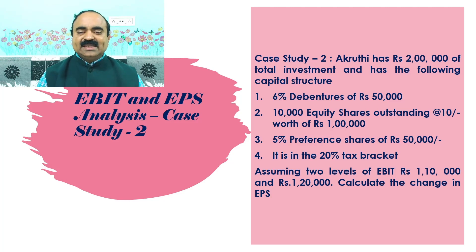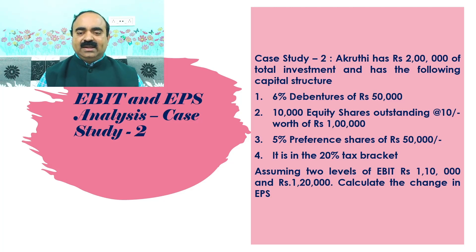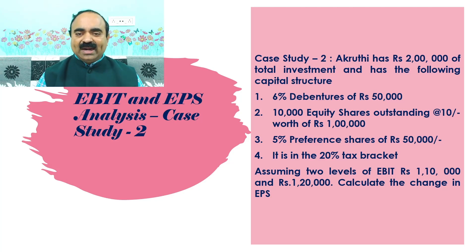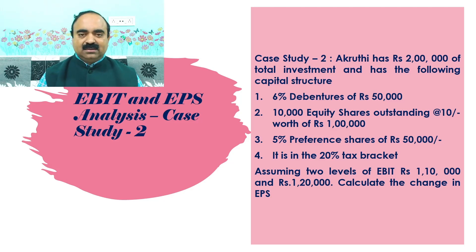1. 6% debentures of Rs. 50,000. 2. 10,000 equity shares outstanding at the rate of Rs. 10, worth Rs. 1 lakh. 3. 5% preference shares of Rs. 50,000. 4. It is in the 20% tax bracket. Assuming two levels of EBIT — Rs. 1,10,000 and Rs. 1,20,000 — calculate the change in EPS.